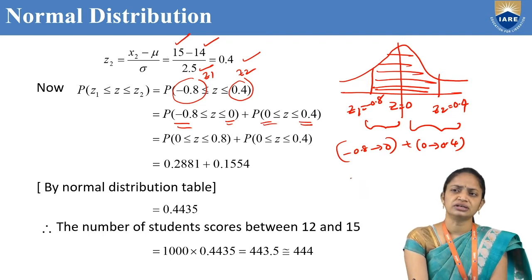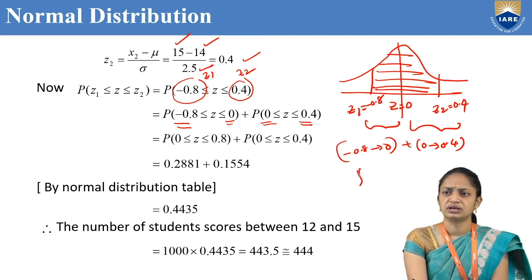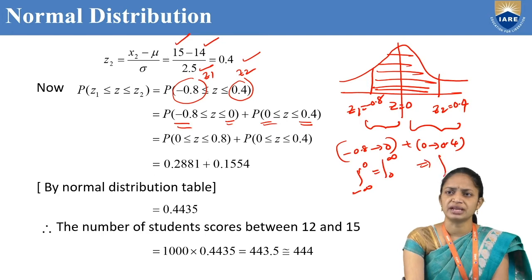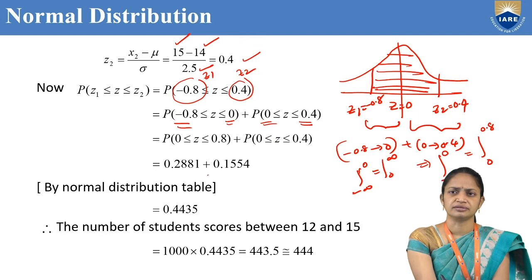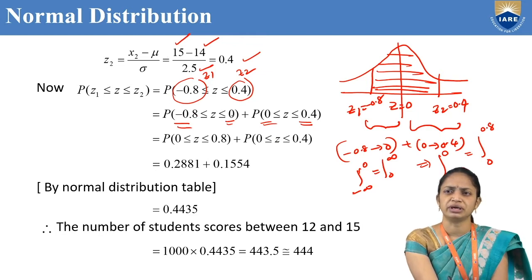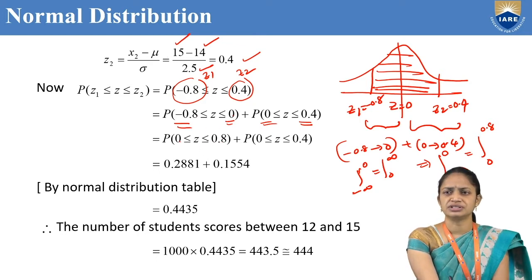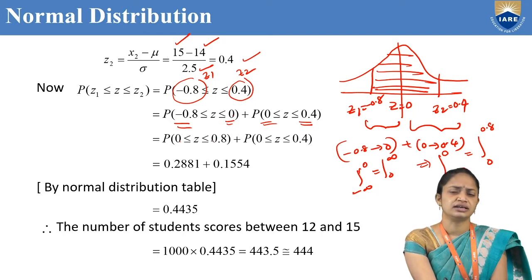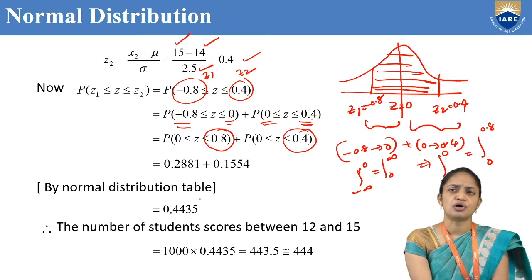Since the normal curve is symmetric about z equal to 0, minus infinity to 0 equals 0 to infinity. Therefore, minus 0.8 to 0 can be written as 0 to 0.8. So we need to look up values 0.8 and 0.4 in the normal distribution table.